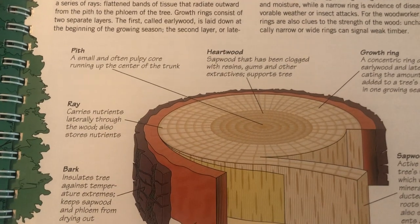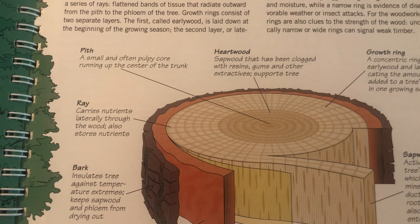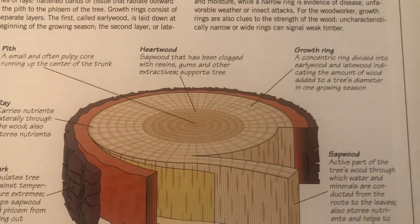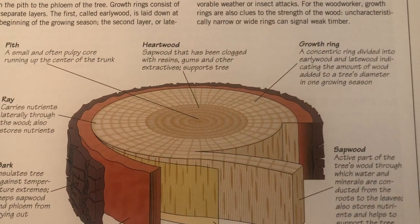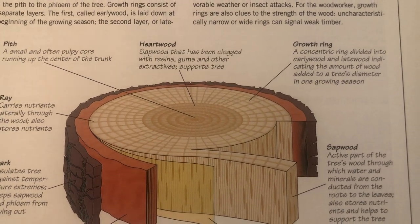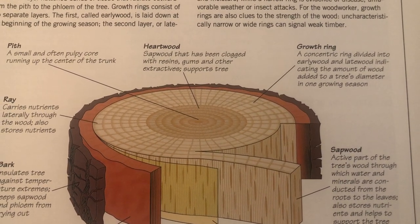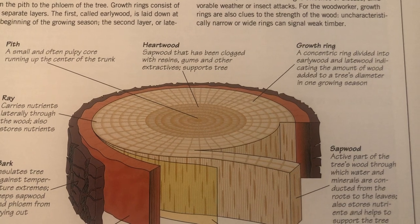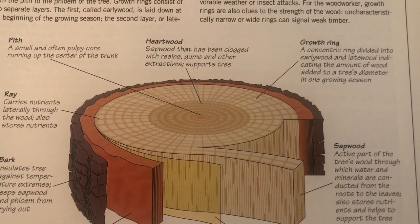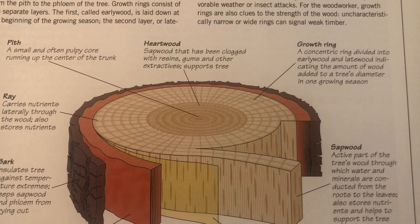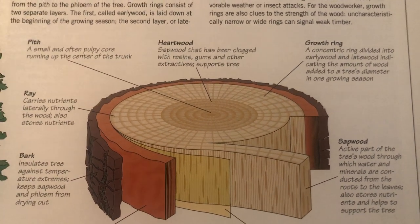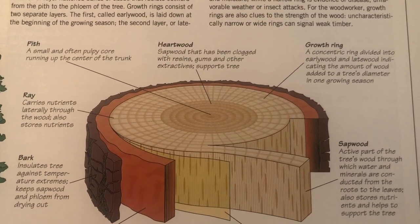Sapwood that has been clogged with resin, gums, and other material. The growth ring — I guess that's the one you count to see how old the tree is — a concentric ring divided into early wood and late wood, indicating the amount of wood added to the tree's diameter in one growing season.